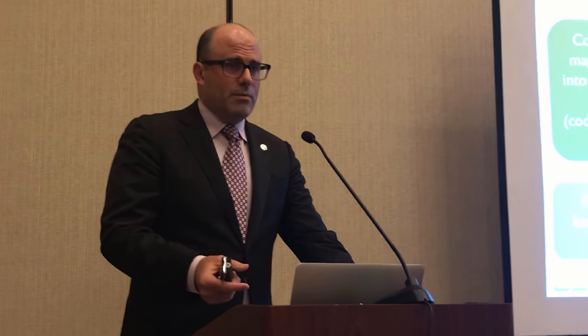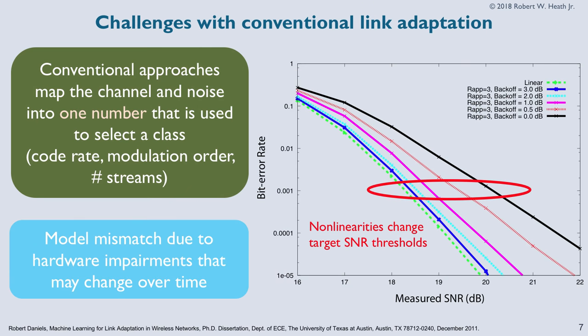You measure the channel, get this number, hit the lookup table, and get the coding, modulation, and number of streams. The challenge is that you have to tune that table quite a bit depending on your metric and your channels. When you get into different environments and different configurations, the table may not work well. What I have here is a BER plot with a power amplifier at different levels of non-linearity. You can see that depending on the power amplifier coefficients, the BER curve for a single modulation coding changes substantially — the span is something like 10-plus dB.